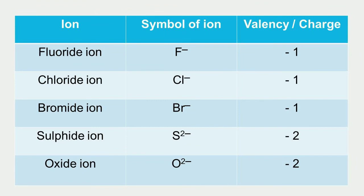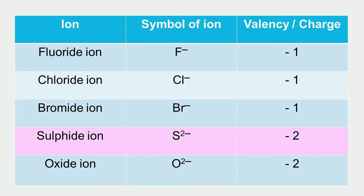These are some negatively charged ions, meaning these are examples of anions. Fluoride ion (F−) carries −1 charge, so its valency is −1. Chloride ion (Cl−) carries −1 charge, so its valency is −1. Bromide ion also carries −1 charge, so its valency is −1. Sulfide ion (S2−) carries −2 charge, so its valency is −2. Oxide ion carries −2 charge, so its valency is −2.